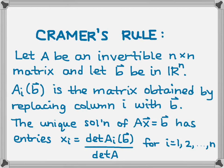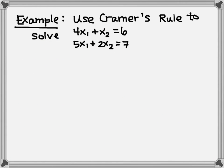The reason we know there's a unique solution of AX equals B is because A has to be an invertible matrix. Remember, any time your coefficient matrix is invertible, you get a unique solution. Let's start by applying this. We'll use this example: use Cramer's Rule to solve the system of equations 4x1 plus x2 equals 6, and 5x1 plus 2x2 equals 7. You know how to easily solve this by putting it into an augmented matrix and row reducing, but we want to practice using Cramer's Rule.